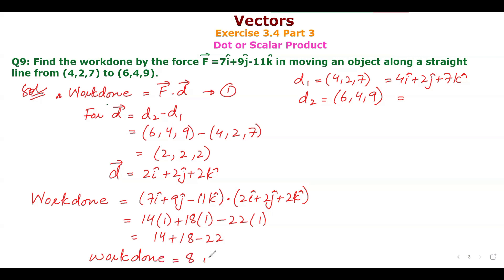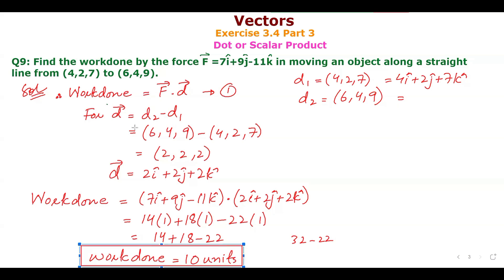The unit of work done is joules. So work done = 10 units. This is how we find work done using the dot product formula.